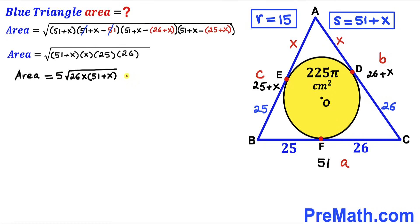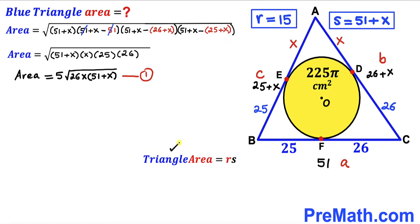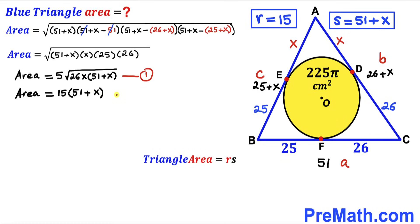Now let's recall the inradius area formula again: Area = r × s. Filling in our values, the area of the blue triangle = 15 × (51 + x). We label this as equation 2.